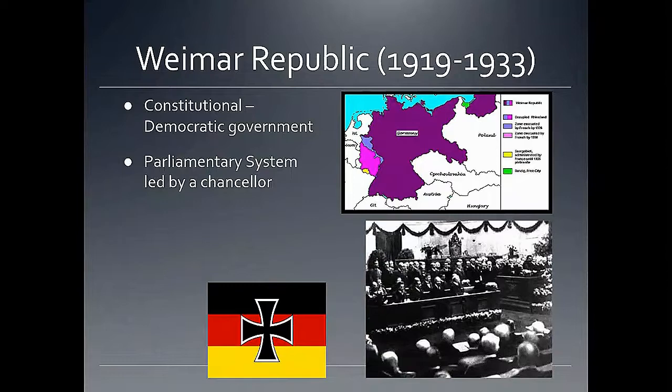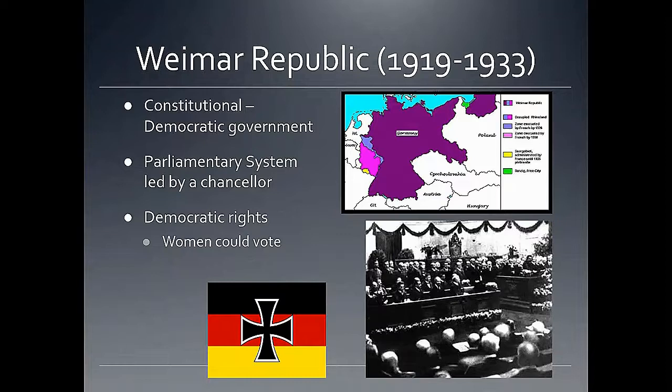In addition, the German constitution gave many democratic rights to German citizens. Most notably, women had the right to vote, very similar to Great Britain and the United States granting suffrage to women after World War I. The German government also had a bill of rights guaranteeing certain freedoms, like freedom of speech and freedom of worship.